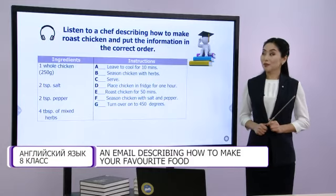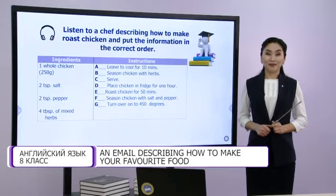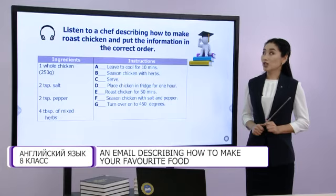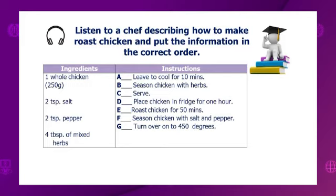Next task is listening. First, look at the ingredients and instructions. Listen to a chef describing how to make roast chicken and put the information in the correct order. Now, I'm going to show you how to cook the perfect roast chicken. First, get your chicken and season it inside and out with salt and pepper. Then, put it inside the fridge for an hour. Do this if you want your chicken to taste even better. You can just start cooking it right away, but I prefer to leave it in the fridge for an hour. While it's in the fridge, turn your oven on to 450 degrees. Take the chicken out of the fridge and season it with herbs inside and out. Then, roast the chicken in the oven for 50 minutes. Once it's cooked, leave it for 10 minutes to cool down, then serve.